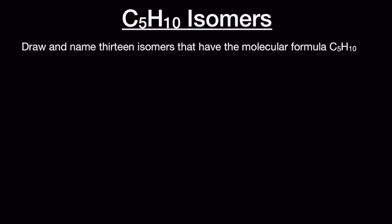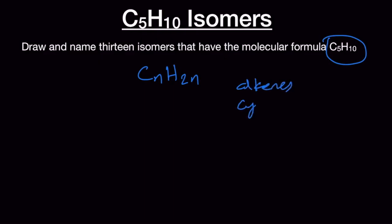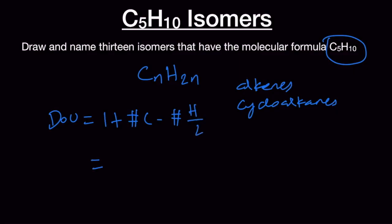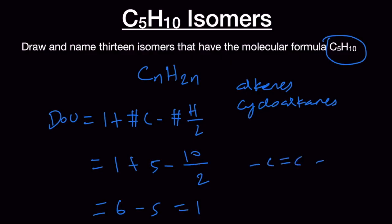Let us draw 13 isomers that have the molecular formula C5H10. This molecular formula fits into the general category CnH2n, which means alkenes are possible and also cycloalkanes are possible. Both combinations we need to explore because the degree of unsaturation equals 1 plus the number of carbon atoms minus number of hydrogen atoms divided by 2, giving us 1 + (5 - 10/2) = 1. So we will either have one carbon-carbon double bond or a ring.